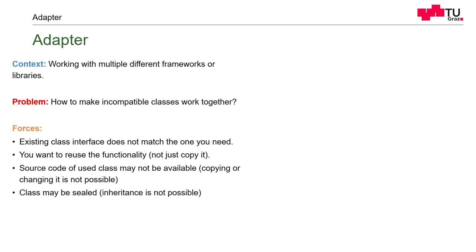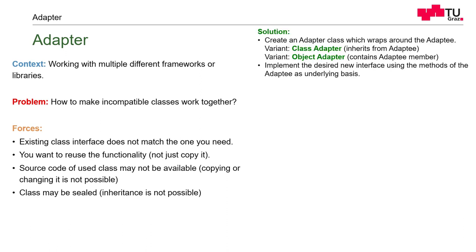Also, classes can be sealed, so we cannot inherit from them. In this case, we have to write an object adapter — we cannot write a class adapter. The solution is to create an adapter which implements the new interface. As we've already seen, there are many variants: either we derive from the original object, or we derive from a new object which already implements the new interface, or we implement all the methods of the new interface ourselves.